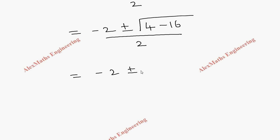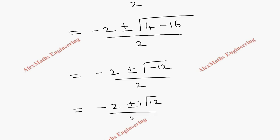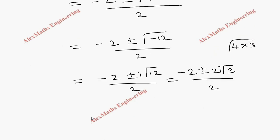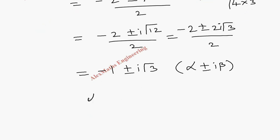So m = (−2 ± √(−12)) / 2. This can be written as (−2 ± √12 · i) / 2. Now √12 = √(4×3), and taking 2 outside the root gives 2√3, so dividing individually we get m = −1 ± i√3. This is of the form α ± iβ, where α = −1 and β = √3.